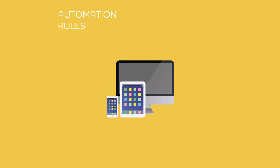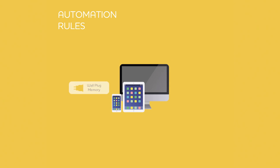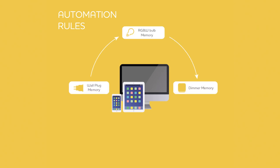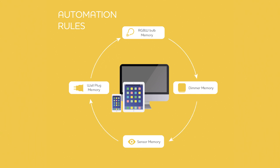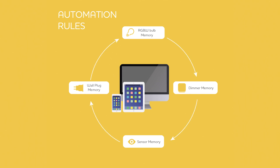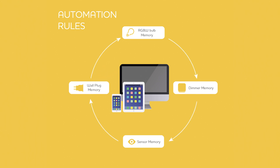All the rules of automation are stored on every Look-in device and spread among all devices. If one is switched off, the network automatically excludes the rules connected with it and restores them after the device is added back. If Wi-Fi is switched off, one of the devices becomes a hotspot and creates the network between the remaining ones. And Look-in devices are fully compatible with Apple HomeKit.